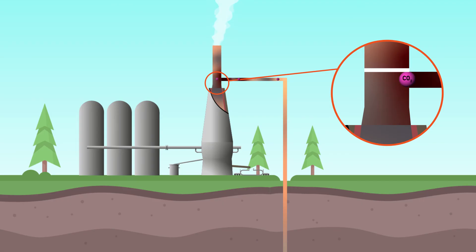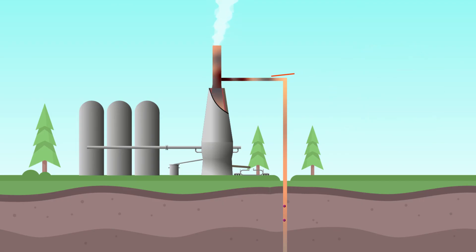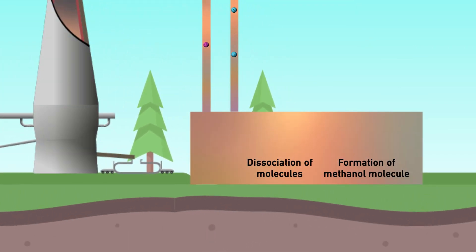The carbon dioxide is collected and injected deep underground to be stored in porous rock, or can be used to make chemicals, such as methanol, by mixing with hydrogen.